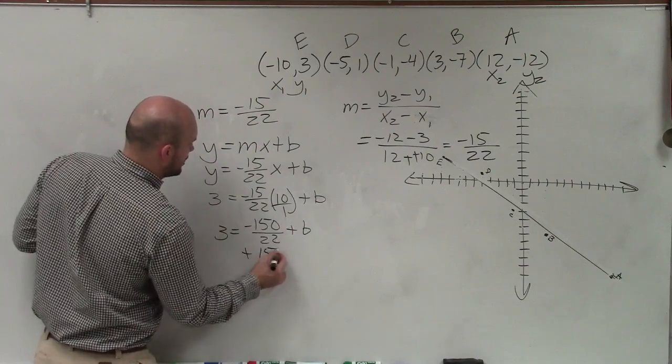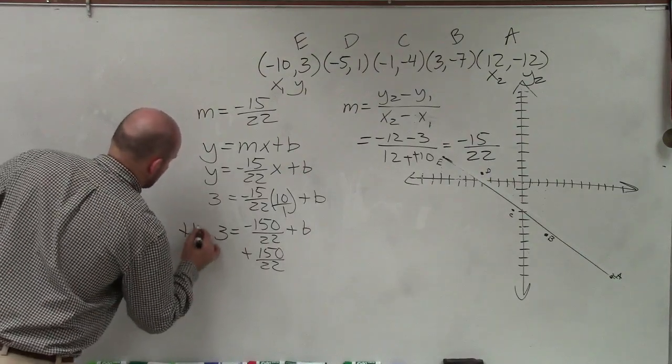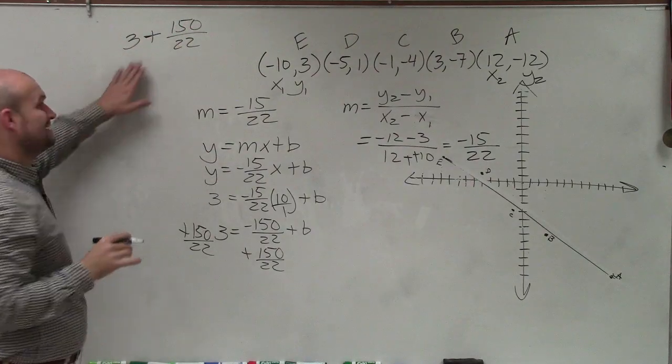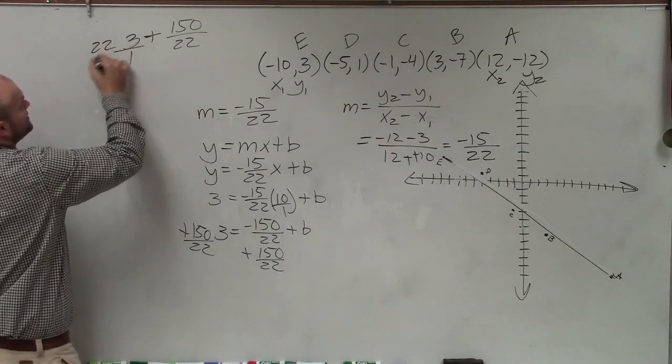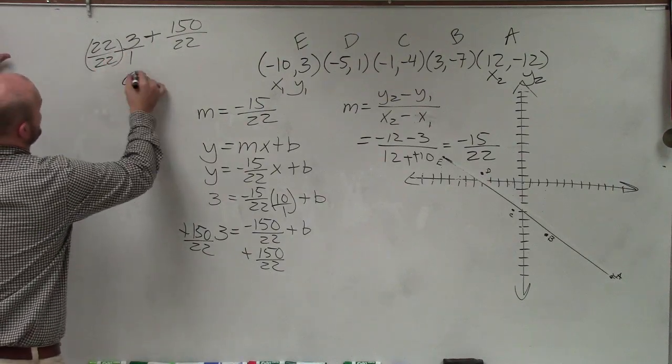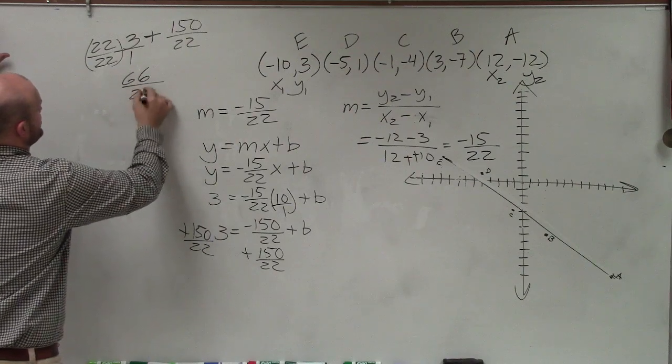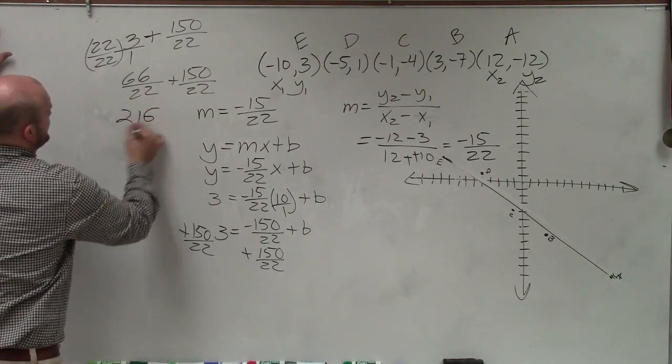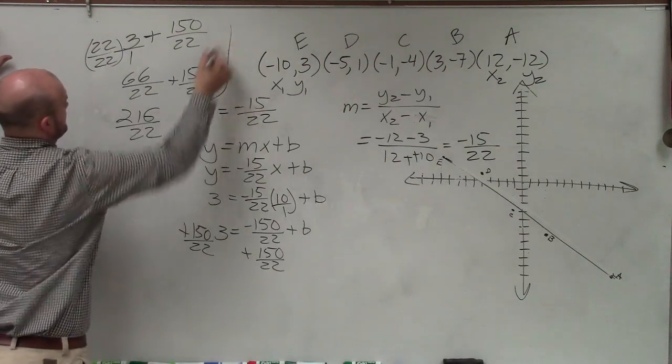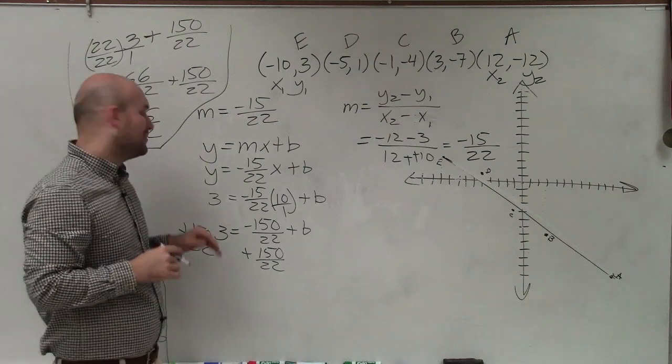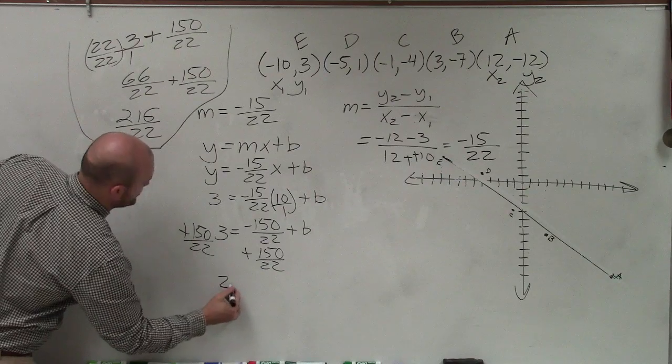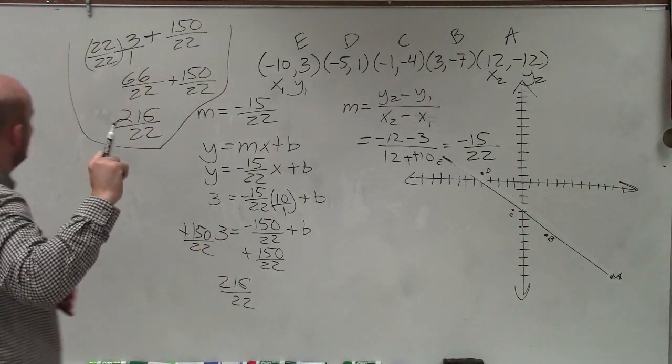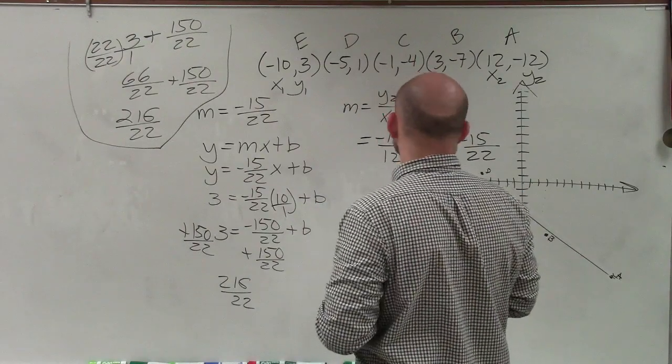Multiply that over, 3 equals 150 over 22 plus b. Now I need to solve for b, so I'll subtract 150 over 22 from both sides. I need to get them to be the same denominator, so I multiply 22 on top and bottom times 3 over 1. So I have 66 over 22 minus 150 over 22. And b should be negative, so I did mess up somewhere. Ah, that's a negative. Yes, I already knew that. That is a negative slope.